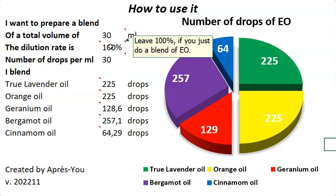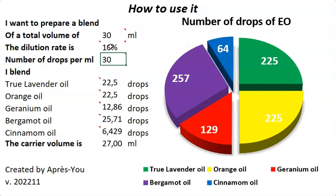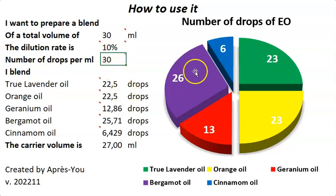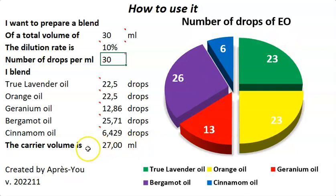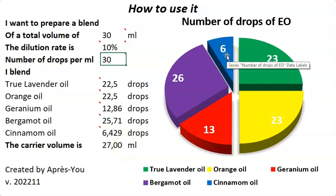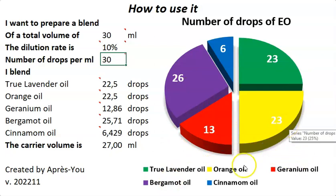Let's say I want to do a spray with alcohol, and I want a dilution rate of 10%. Now I will have new numbers, getting the number of drops and the volume of a carrier — in my case, alcohol. It means that when I start to make the spray, I will add 27 milliliters of alcohol, then add 6 drops of cinnamon, 26 of bergamot, 13 of geranium, 23 of orange, and the same number for true lavender. And like that, you have a complete calculator for your blend.